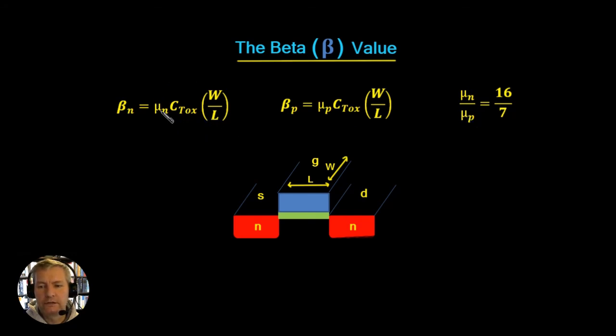Now the C_ox is the capacitance of the oxide layer, and the capacitance is given by the permittivity of this oxide material. But again, this is process-related and we don't have access to this.